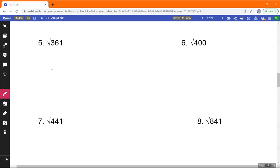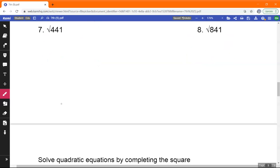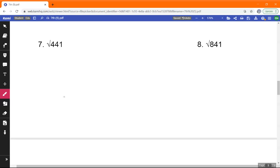Okay, 361 equals 19. This one is easy, 400 equals 20. Okay, number 7, what is number 7? Well, 441 equals 21. Okay, 8, 841 equals 29.